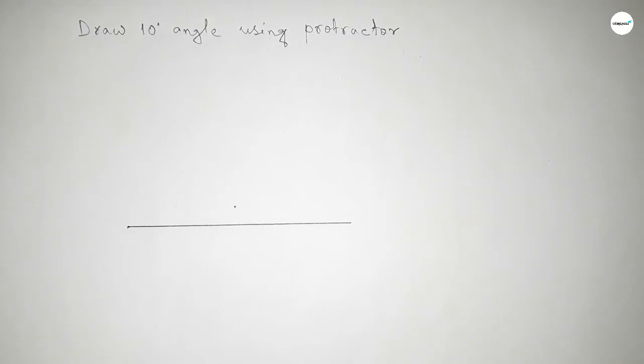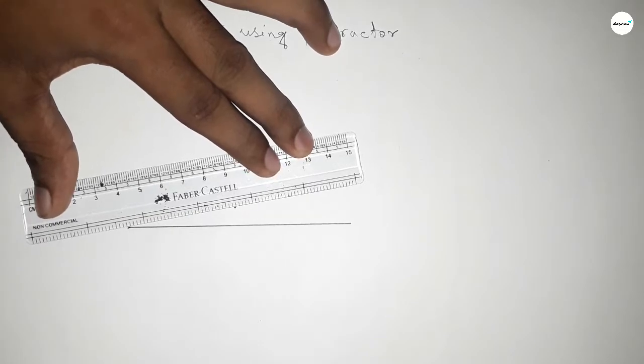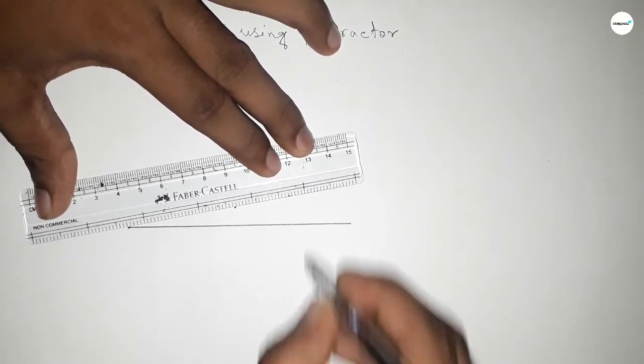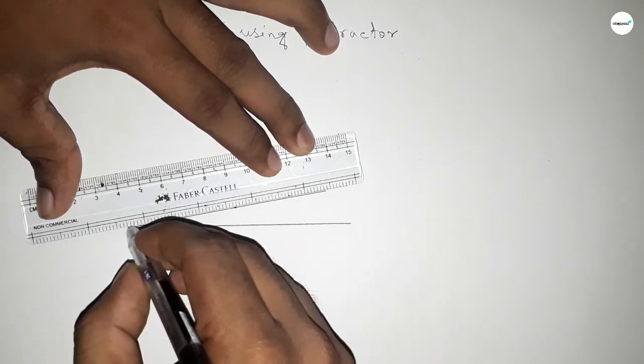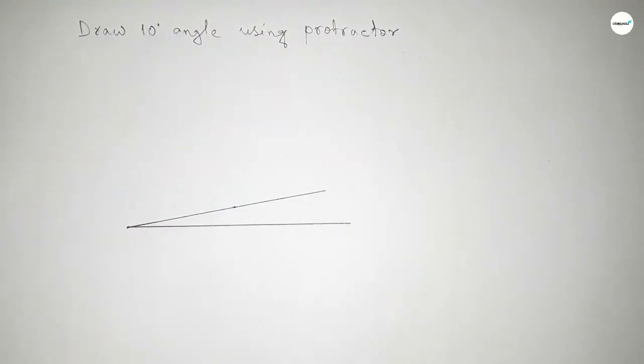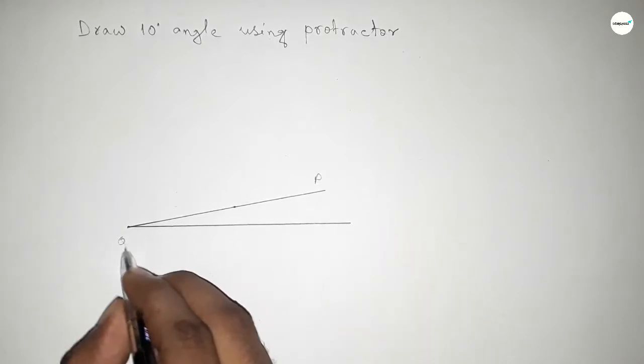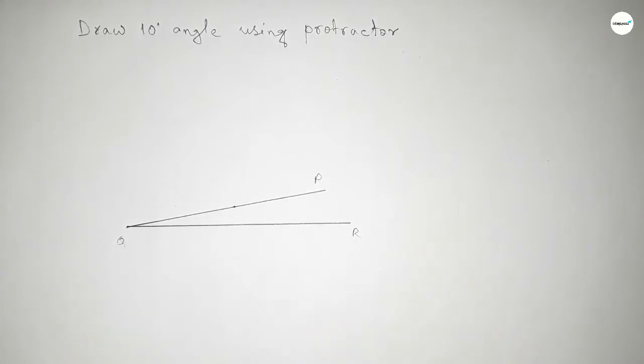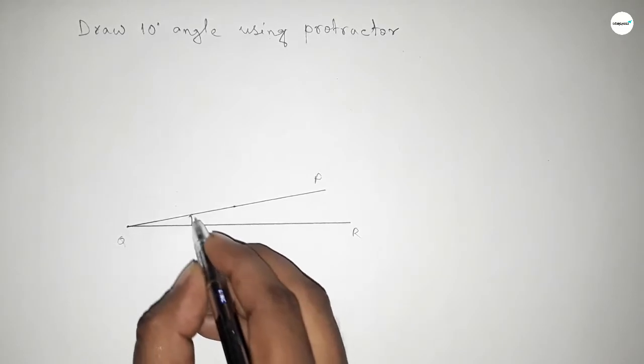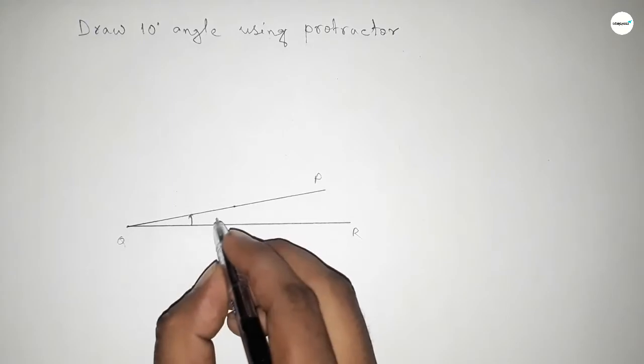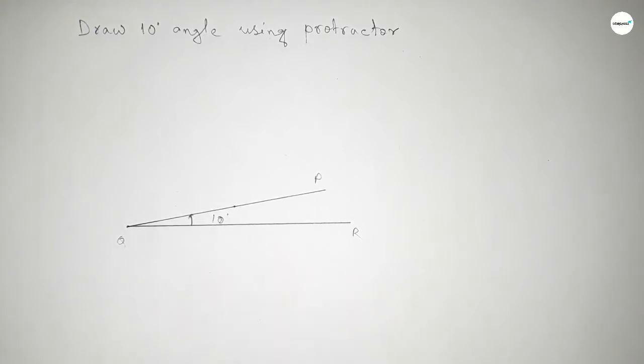Okay, now joining this side to get 10 degree angle. So we got 10 degree angle by joining this line. So this is P Q and R, so angle PQR is 10 degree.